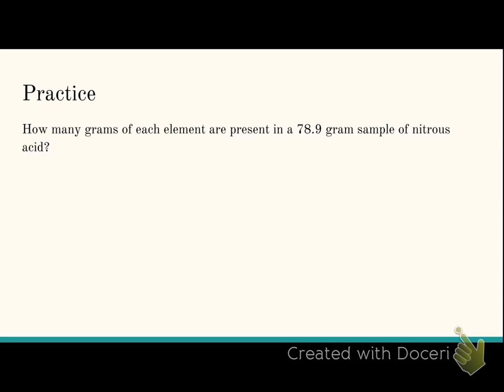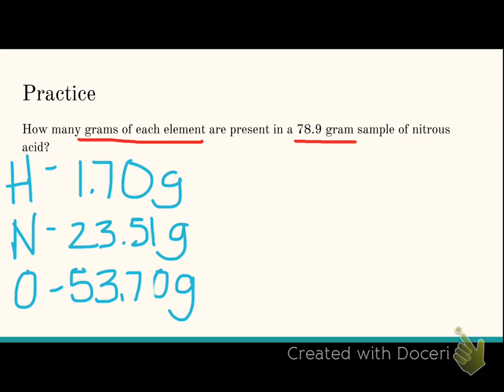So one more for you to try. You're going to take the information that you got on the last problem, and we want to find out how many grams of each element are present in a 78.9 gram sample of nitrous acid. So I want the mass or the grams of each element in a 78.9 gram sample. So go ahead, pause it, take a look, and come back when you're done. Here are your answers: 1.7 grams of hydrogen, 23.51 grams of nitrogen, 53.70 grams of oxygen.